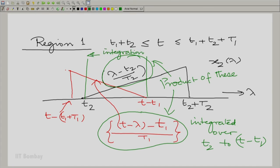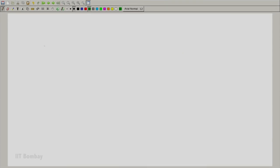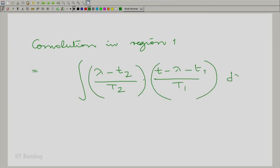Let us write that down. We are saying essentially the convolution in region 1 is the product lambda minus T2 divided by capital T2 times T minus lambda minus T1 divided by capital T1 d lambda, integrated from T2 to T minus T1.